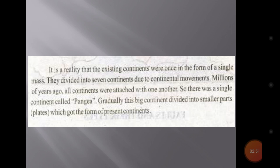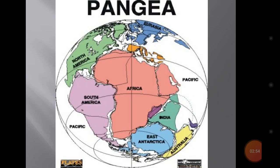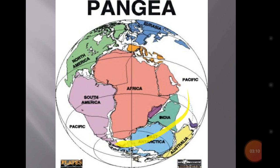Gradually this big continent divided into smaller parts which took the form of the present continents. This is a hypothetical picture of Pangaea — all the continents you are seeing here are combined to form Pangaea. This is North America, Eurasia, South America, Africa, and so on.